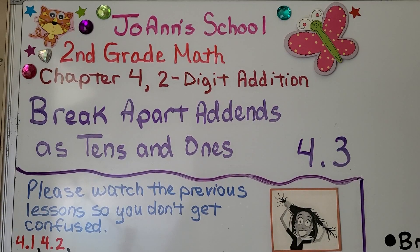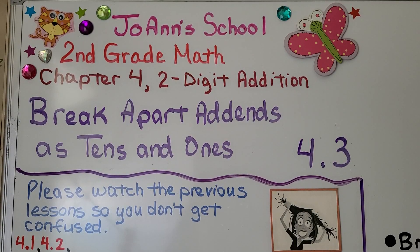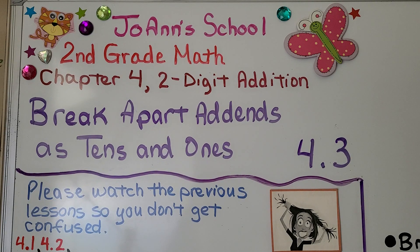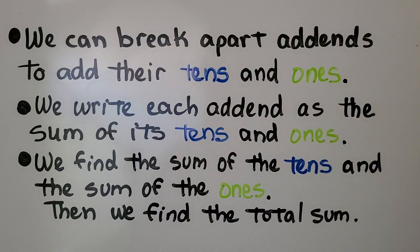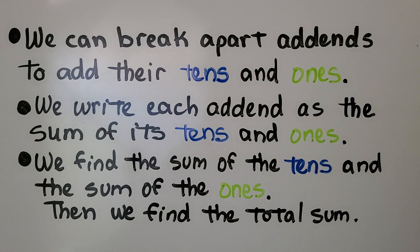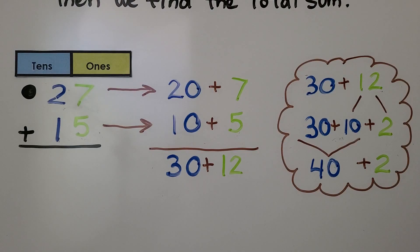Lesson 4.3: Break Apart Addends as Tens and Ones. We can break apart addends to add their tens and ones. We write each addend as the sum of its tens and ones, find the sum of the tens and the sum of the ones, then find the total sum by putting them together.